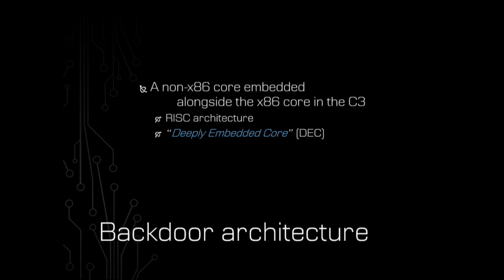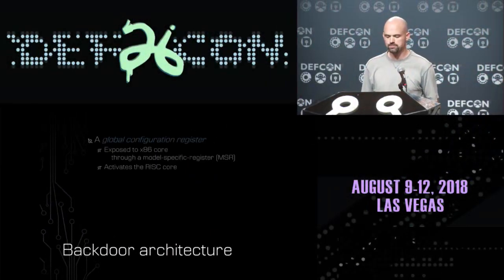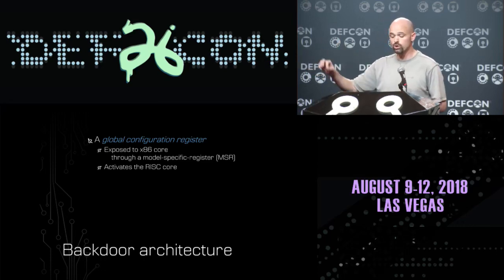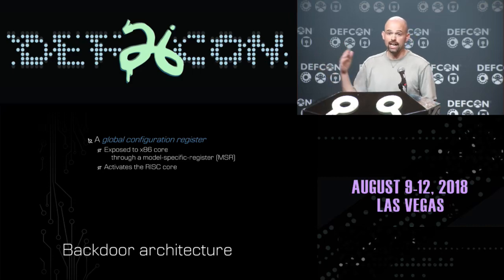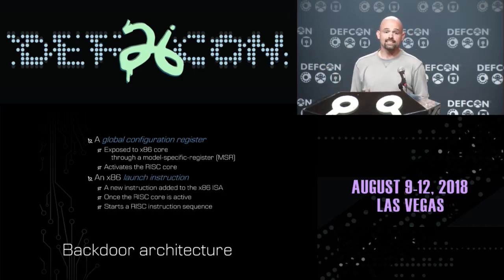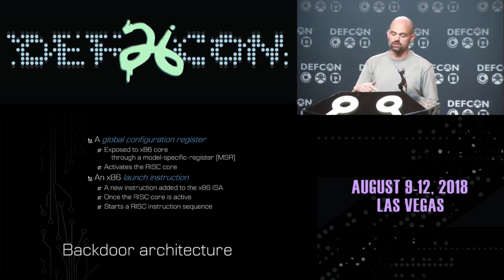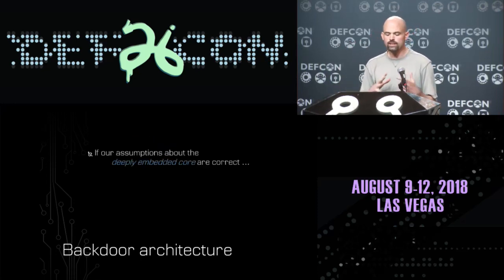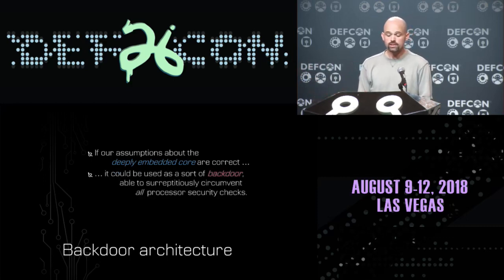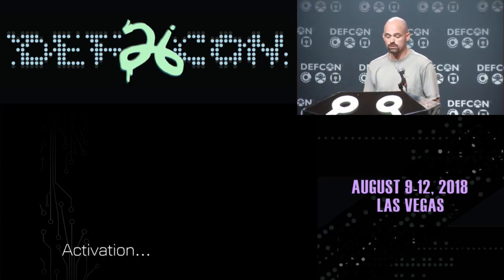The patents also talked about something called the 'global configuration register' — basically a register exposed to the x86 core through a model specific register — which can activate the RISC core. They also talked about an 'x86 launch instruction': a new instruction added to the x86 ISA where, once the RISC core is activated, you can start a RISC instruction sequence through the launch instruction. Putting all these ideas together, if our assumptions about the deeply embedded core are correct, you could essentially use this as a back door to surreptitiously circumvent all processor security checks.